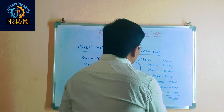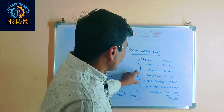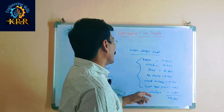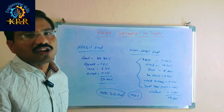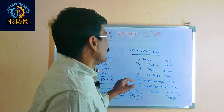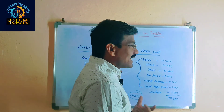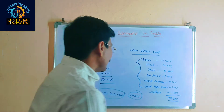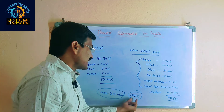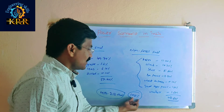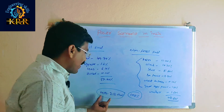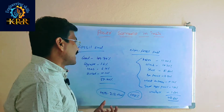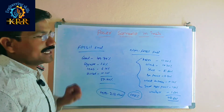These all come under non-fossil fuel. We are using non-fossil fuel to generate 42.60% of the power in India. Total generation is 100%, which is 412.212 gigawatts of power generation taking place in India.